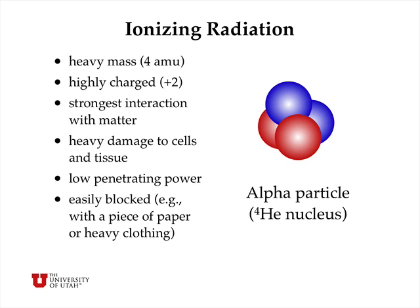An alpha particle has a relatively heavy mass — about four atomic mass units. It's highly charged, with an electric charge of plus two, and has very strong interaction with matter. So if an alpha particle is emitted from an atom and interacts with your cells and tissues, it can cause relatively heavy damage: ionization, breaking chemical bonds, things like that.